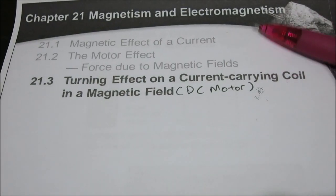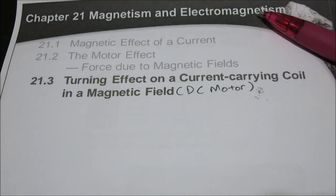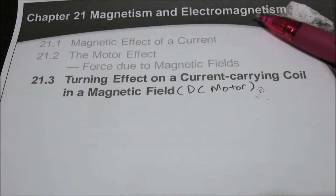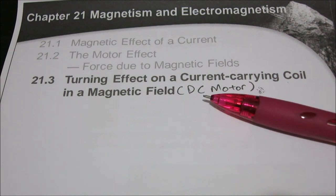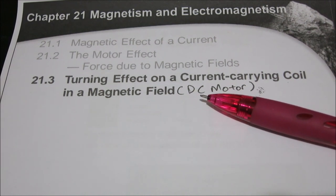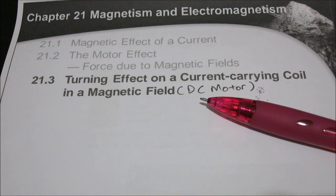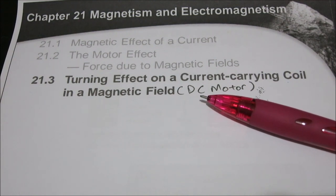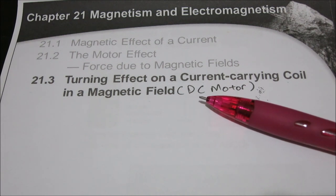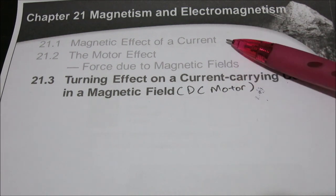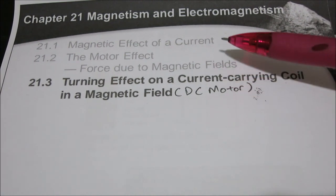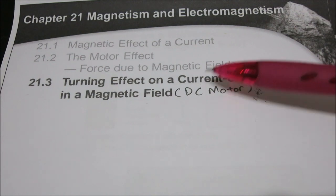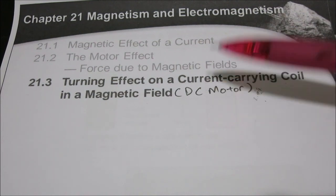Hi guys, this is the second video on our study of electromagnetism. In this video, we'll cover DC motors, or the turning effects of current-carrying coils in magnetic fields. This learning objective is only required for pure physics students. For combined and NA students, there's no need to view this video. For pure physics students, the first two learning objectives were covered in the first video — I'll link it in the description box.